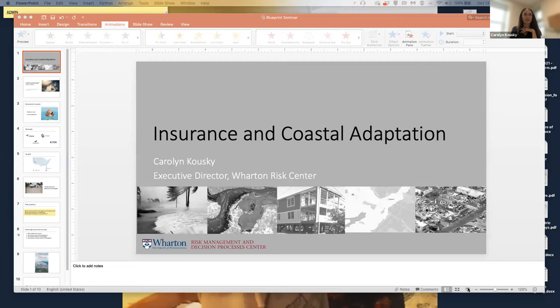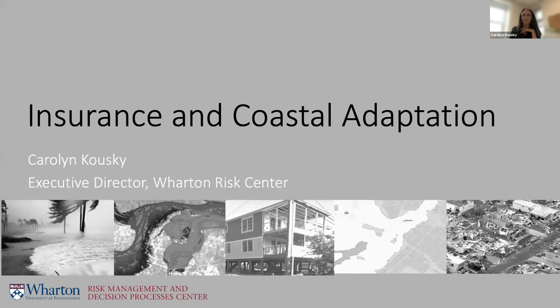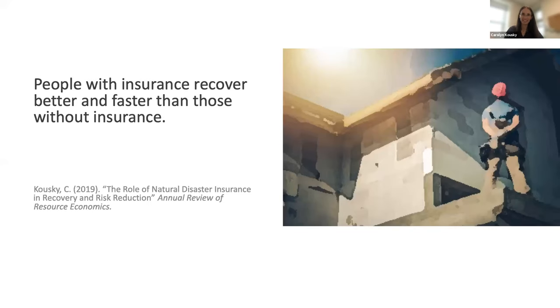Thank you, Carlos. Now we'll hear from Carolyn, and then we'll take questions on all the presentations. Hi everyone, it's great to be here. I'm going to talk about my chapter in the book on insurance and coastal adaptation, and then give a quick overview of the book project. Let me start from the beginning: why do we care about insurance? Insurance is really critical for recovery from climate-related disasters. There's a robust body of research showing that those with insurance recover better and faster than those without.